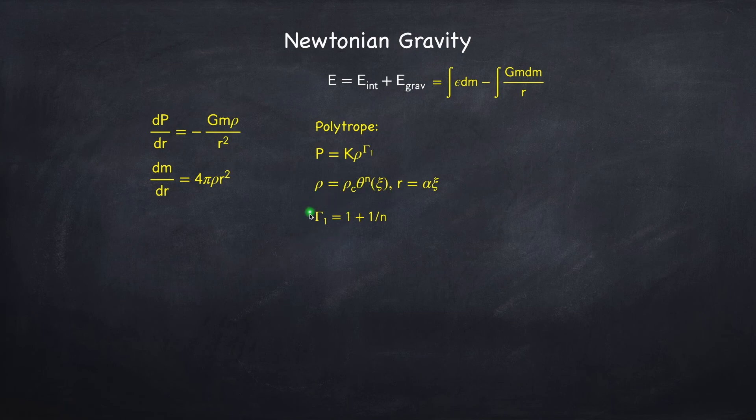n is related to gamma, or gamma 1, as 1 plus 1 over n. So if this is gamma, then n is 3, and if it's gamma 1 it might be something else depending on the actual state of the matter.